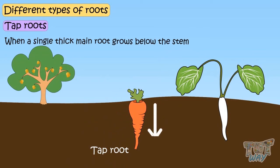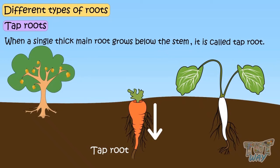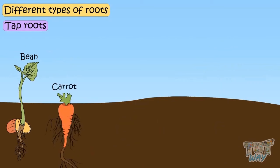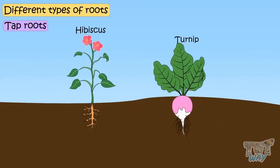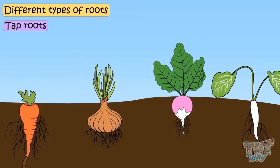Many thin roots, which are unequal in size, grow from this main root. Beans, carrots, mango, radish, rose, hibiscus, and turnips are the plants that have tap roots. Tap roots store food in them, and we eat these roots.